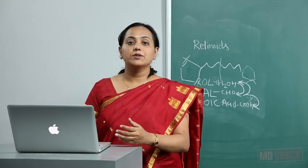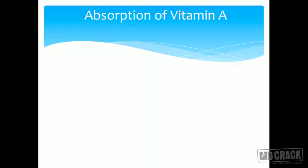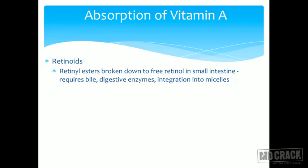Let us look at the absorption of vitamin A. Since it is a fat-soluble vitamin, bile is required for its absorption. Retinoids and carotenoids are handled differently within the body. For retinoids, retinol esters are broken down to free retinol in the small intestine. This requires bile and digestive enzymes, and the retinol is finally integrated into micelles.